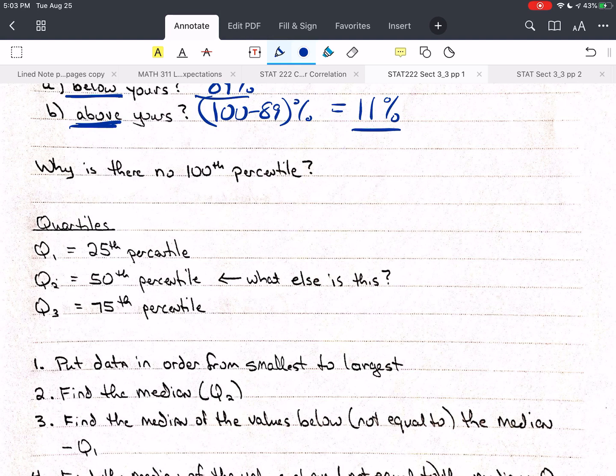And that is why we don't have a 100th percentile. And we don't really need a 0th percentile, because only one value would be at the 0th percentile, so we start at 1. Alright. Now, let's talk about quartiles.